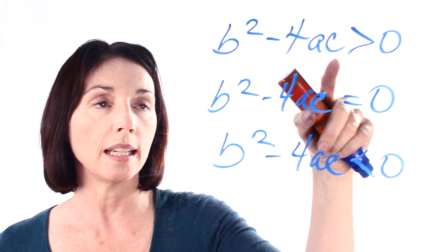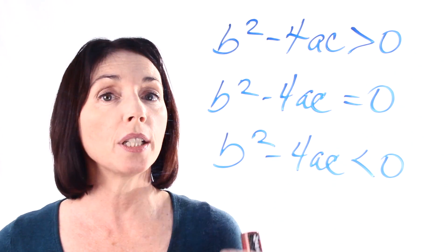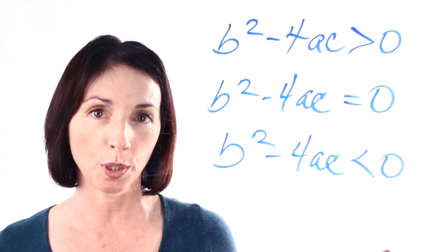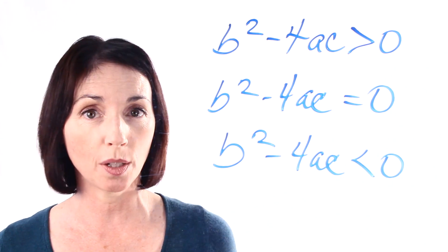If b squared minus 4ac is greater than zero, it means that your quadratic equation has two distinct real roots. That means two different real numbers that will solve the equation.